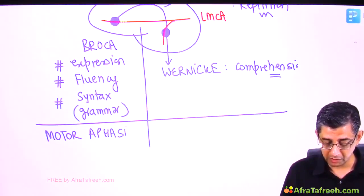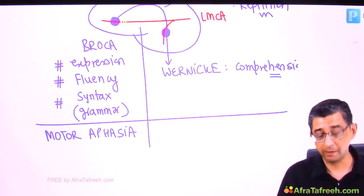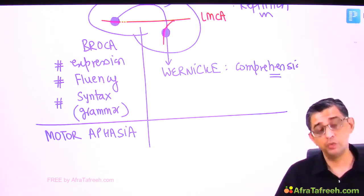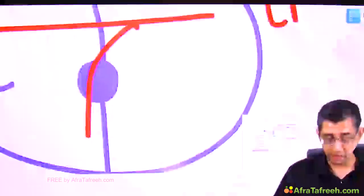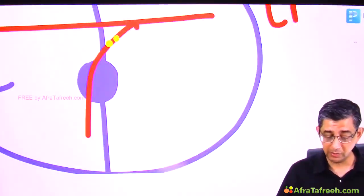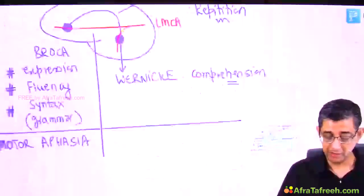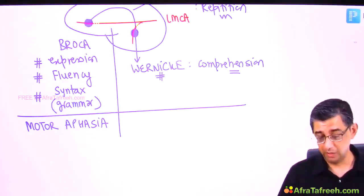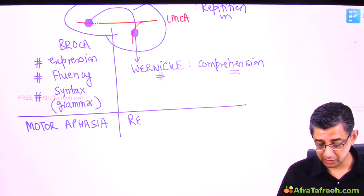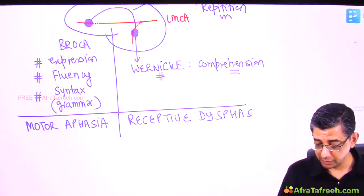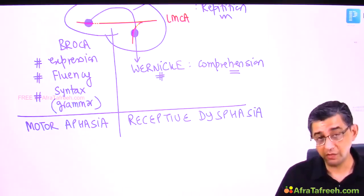MCQ-wise: if they say motor aphasia, the answer is left MCA superior division. If instead the clots occlude the inferior division of the left MCA, then Wernicke's area loses its blood supply. The patient cannot understand what you're saying — the technical term is receptive aphasia.